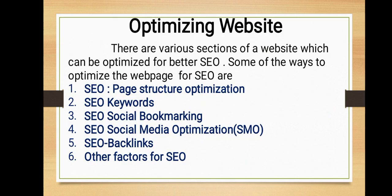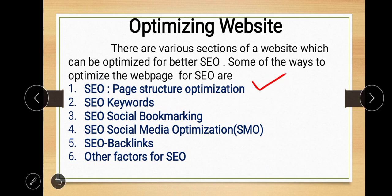There are various sections of a website which can be optimized for better SEO. Basically there are a number of sections in each and every website that can be optimized for better SEO. Some of the ways to optimize the web page for SEO are: first, SEO page structure optimization; second, SEO keywords; third, SEO social bookmarking; fourth, SEO social media optimization; fifth, SEO backlinks; and sixth, other factors for SEO. So here they give six ways to optimize a website.